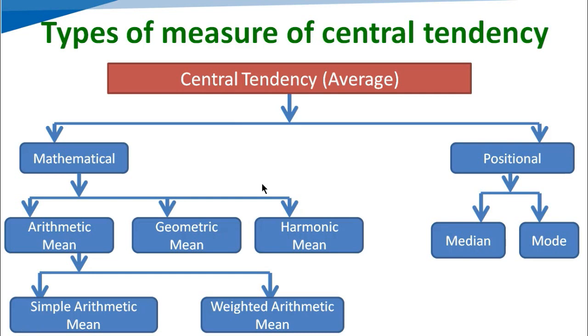Average is divided into two parts: mathematical and positional. In mathematical, it is further divided into arithmetic mean, geometric mean, and harmonic mean.